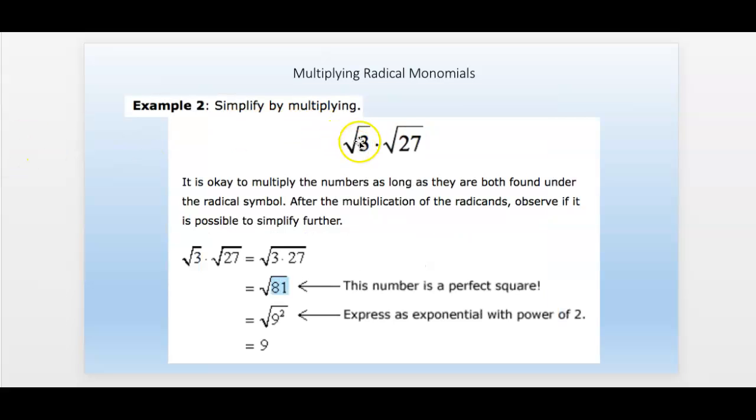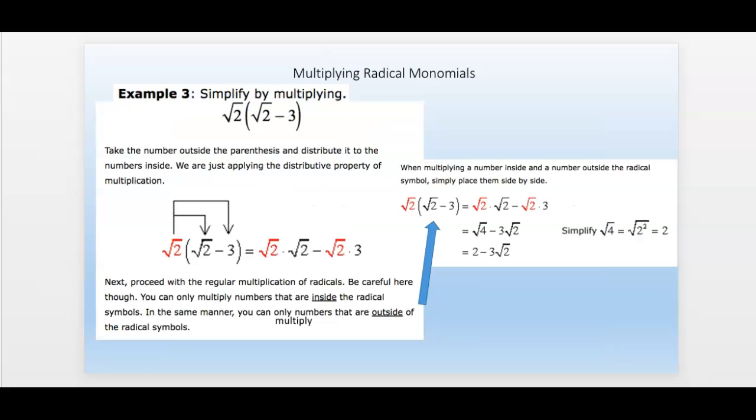Another example, the square root of 3 times the square root of 27. If we multiply these together, 3 times 27, we get 81. The square root of 81 is 9. So it's pretty easy to simplify it.